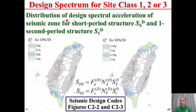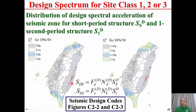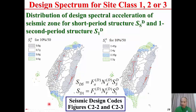Here is the distribution of design spectral acceleration of seismic zone for short period structure, SSD, and for one-second period structure, S1D. The highest value for SSD is 0.8G, occurring in areas close to active faults — the red lines represent the locations of active faults. When an area is close to an active fault, SSD takes the highest value of 0.8G. Similarly, close to active faults, S1D takes the highest value of 0.45G. These figures are taken from Figure C2-2 and Figure C2-3 of the seismic design codes.